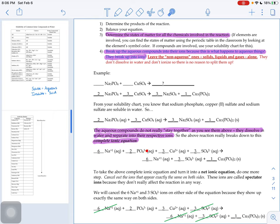You could write it as PO4 three minus or PO4 minus three. The order of the minus and the number doesn't matter. So this Na3PO4 breaks up into sodium ions and phosphate ions.